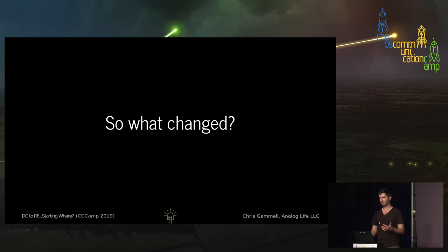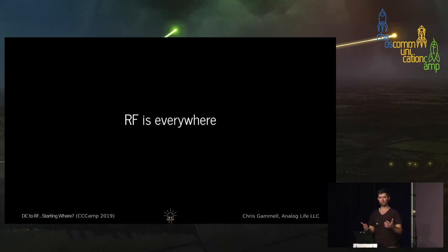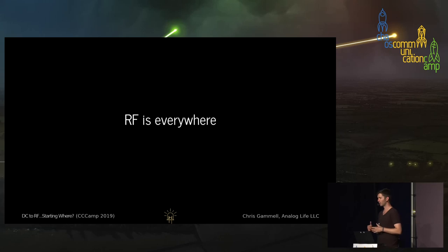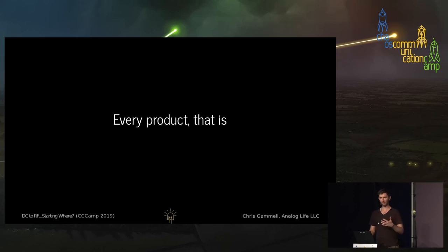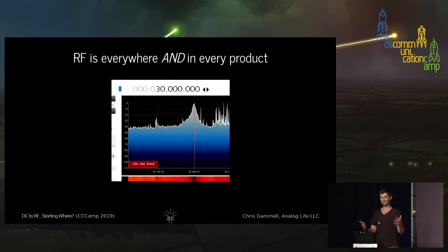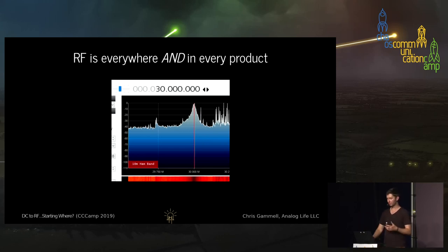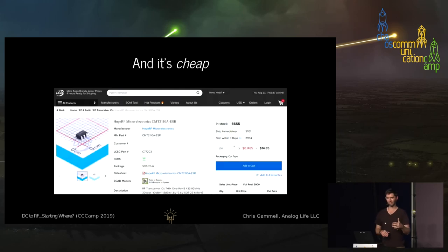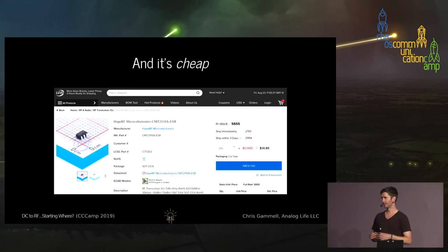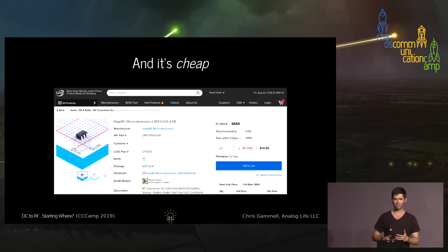What really changed is the world around us. We're all wearing wristbands right now that have Bluetooth on it. It's everywhere. Every product basically throws in a Bluetooth chipset for effectively free, or has some kind of connectivity because that's a feature. That means every product is going to have RF in it. RF is in everything. And it's super cheap — this is a 433 MHz transmitter that's 15 cents if you buy 100 of them. You could throw it in anything.